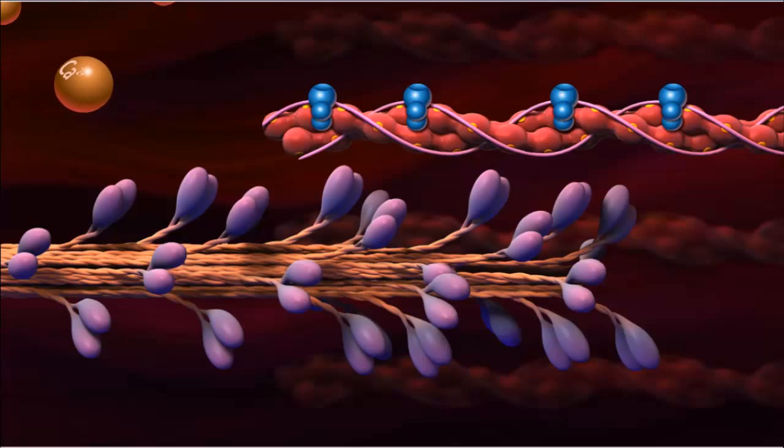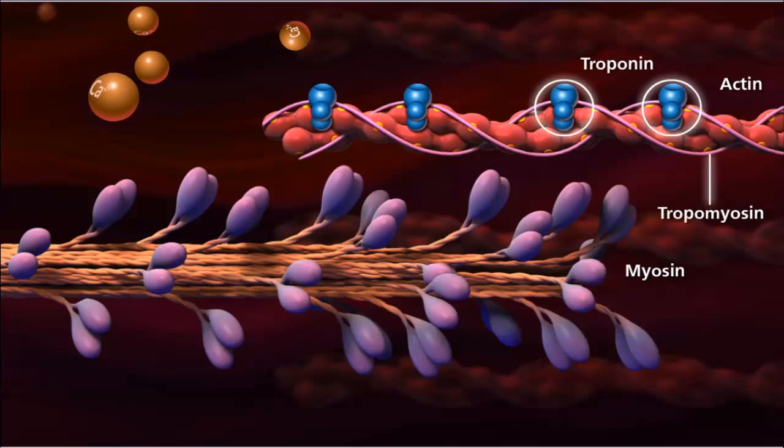Muscle contractions are controlled by the actions of calcium. The thin actin filaments are associated with regulatory proteins called troponin and tropomyosin.